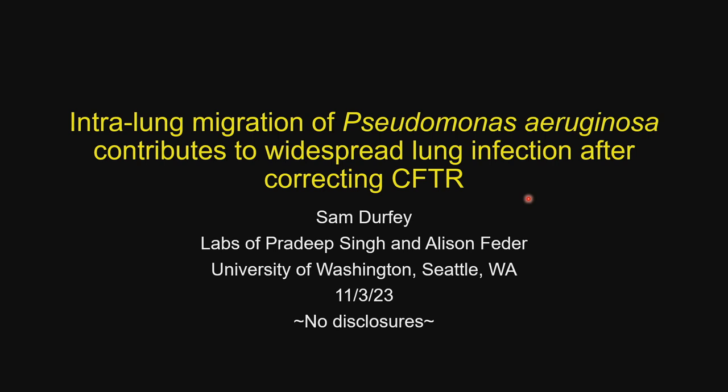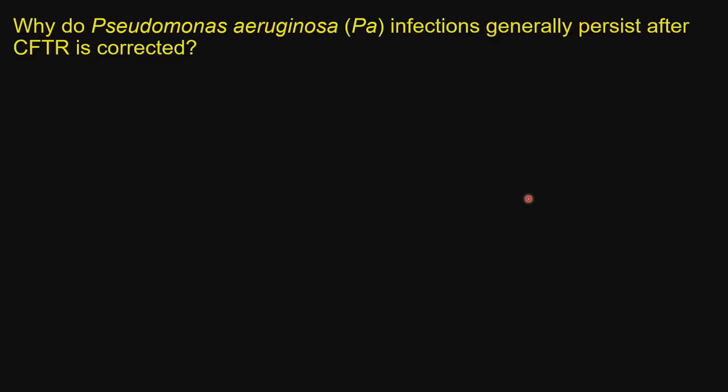Thank you all for coming today, especially to this early 7 a.m. session. I'm excited to tell you about work I've been doing in Pradeep and Allison's lab, where we've been studying how intralung migration of Pseudomonas aeruginosa contributes to widespread lung infection after correcting the CFTR. The large observational study PROMISE recently showed that about two-thirds of subjects remain chronically infected with Pseudomonas aeruginosa after starting elexacaftor/tezacaftor/ivacaftor, despite marked improvements in clinical parameters and CFTR activity.